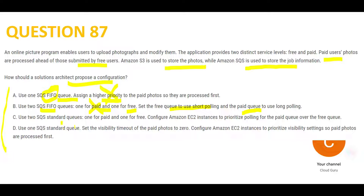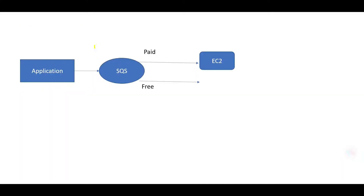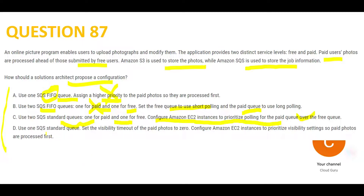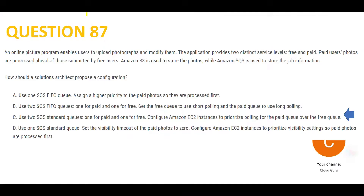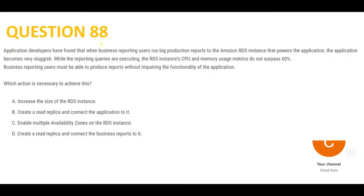Option C says use two SQS standard queues — one for paid, one for free — and configure EC2 to prioritize polling the paid queue. EC2 will plug into the paid queue and process it first, so this looks correct. Option D says use one SQS queue and set the visibility timeout — visibility timeout is used to avoid processing the same record multiple times. There is no duplication use case here, so D is wrong. C is my final answer.